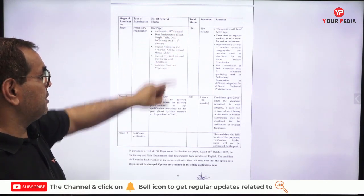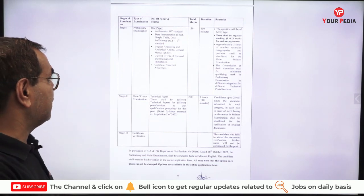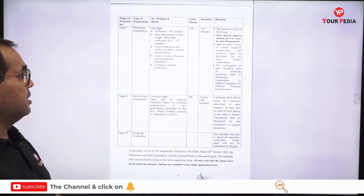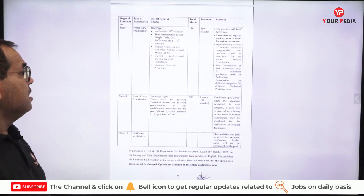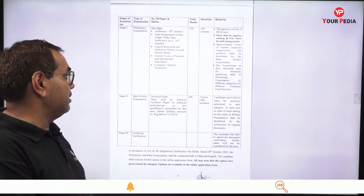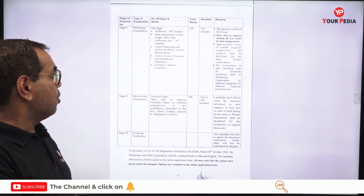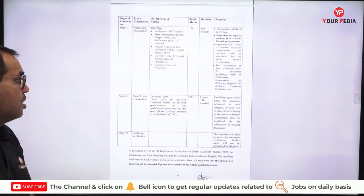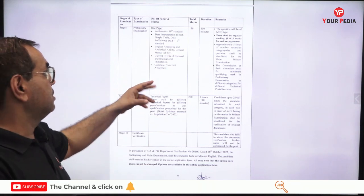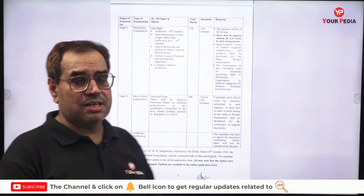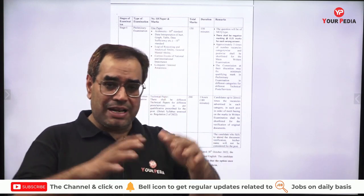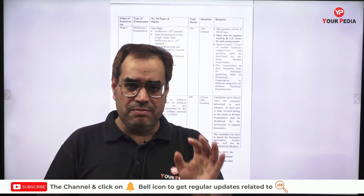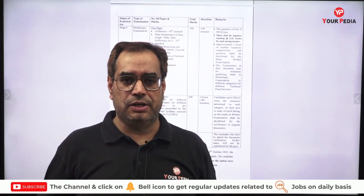The topics for the Preliminary Exam include: Arithmetic at 10th class standard, Data Interpretation covering charts, graphs, tables, data sufficiency, etc. at 10th standard level, Logical Reasoning, Analytical Ability, General Mental Ability, Current Events of national and international importance, and Computer and Internet Awareness. This is the prelims syllabus — it's not a very large syllabus, so if you prepare well, you can clear the exam easily.